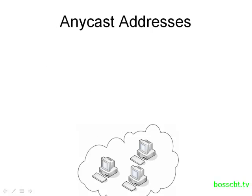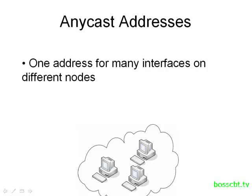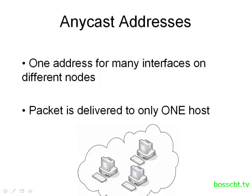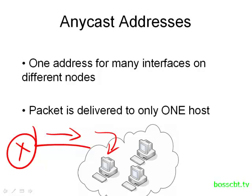The last type of address is known as the anycast address. With anycast, one address represents many different interfaces on different devices — similar to multicast in that sense. However, the key difference is that when you send a packet to an anycast address, it is only delivered to one of the hosts in that group, not all of them. For example, if three web servers are part of an anycast group, you send a packet to the anycast IP address and you will be routed to the nearest instance — the most efficient routing path to the closest device.